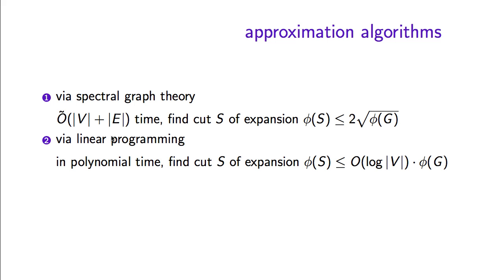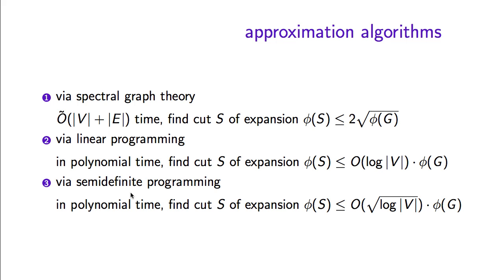Then we will see an algorithm using linear programming, where the approximation ratio grows logarithmically with the number of vertices. After that, we will see an algorithm using a more sophisticated convex relaxation that always does at least as well as either of those two, since it contains all the information accessible to both. One provable fact about this relaxation is that it achieves an O(√log n) approximation for the problem.